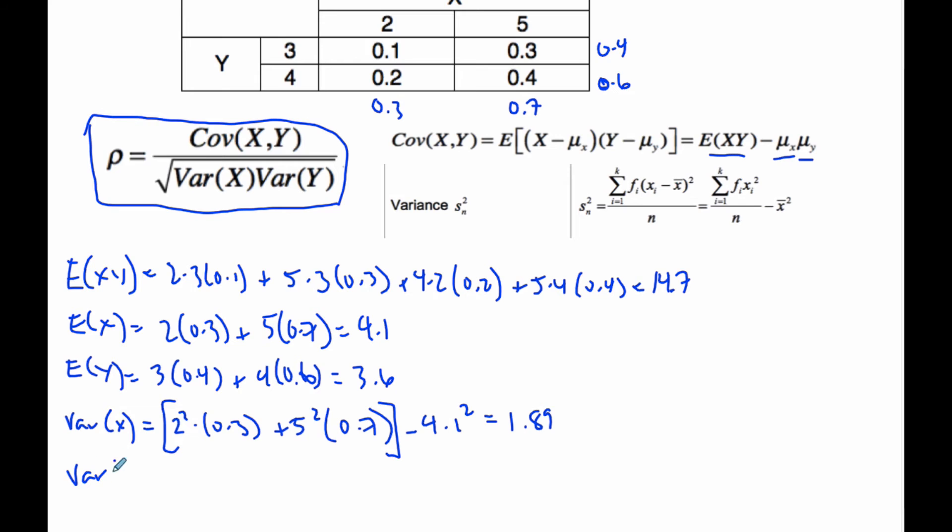Similarly, the variance of Y is 3 squared times 0.4 plus 4 squared times 0.6. And this value is subtracted from 3.6 squared, which, if I'm looking at my notes here, ends up being 0.24.